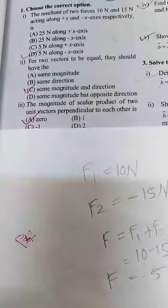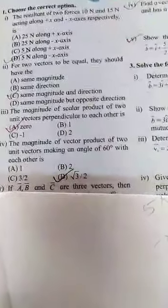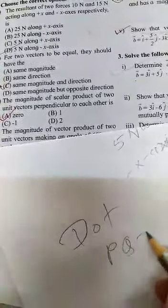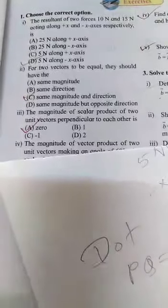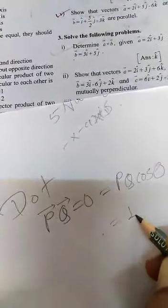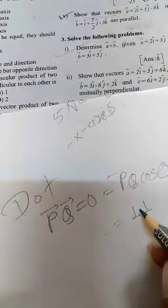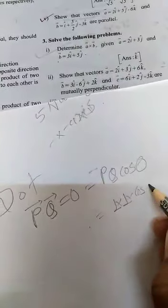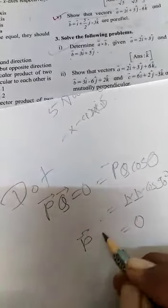Third question: the magnitude of the scalar product of two unit vectors perpendicular to each other. The scalar product is also called the dot product. We know that if p dot q equals zero, the two vectors are perpendicular. Vector p dot vector q equals pq cos theta. Since both are unit vectors, p equals 1 and q equals 1, and cos 90° equals 0. Therefore, 1 times 1 times 0 equals 0. So vector p dot vector q is equal to 0.